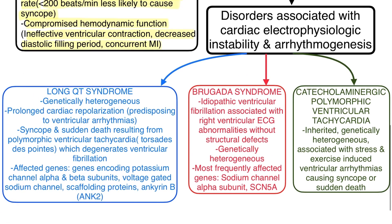Now let's discuss disorders associated with cardiac electrophysiologic instability and arrhythmogenesis, which can be divided into three main syndromes. The first is Long QT syndrome, which is genetically heterogeneous, meaning a variety of genetic defects lead to this disease. There is prolonged cardiac repolarization which predisposes to ventricular arrhythmias, and syncope and sudden death resulting from polymorphic ventricular tachycardia, also called torsades de pointes, which degenerates into ventricular fibrillation. Commonly affected genes include those encoding potassium channel alpha and beta subunits, voltage-gated sodium channel, scaffolding protein, and ankyrin B.